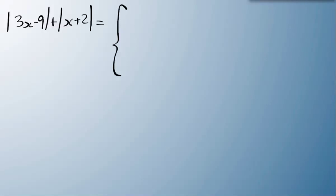The final step is to put it all together. Our original expression was |3x-9| + |x+2|. Rewriting it, the first part is minus 4x plus 7 for x in the interval negative infinity to minus 2.